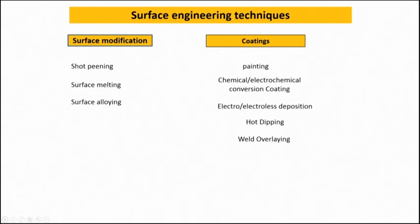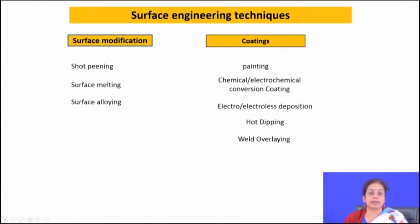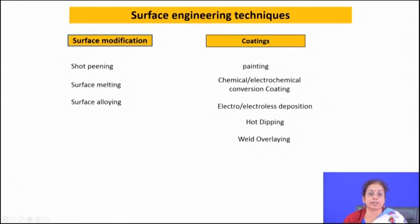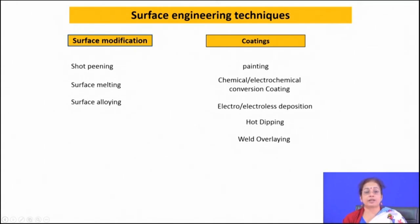These are three surface modification techniques applicable to combat corrosion problems. For coating techniques: painting is a versatile technique widely applied for protection against corrosion, acting as a barrier layer. Chemical/electrochemical conversion coatings and electrolytic deposition can be applied for corrosion protection. Hot dipping applies a thin layer of zinc or aluminium coating and saves the surface from oxidation.